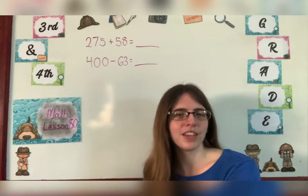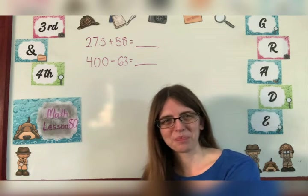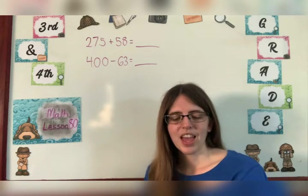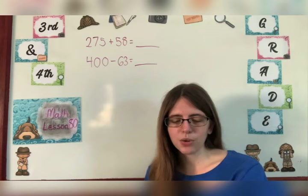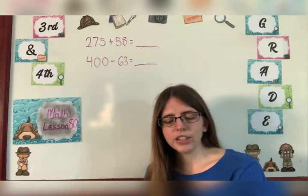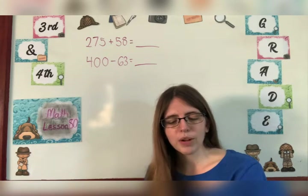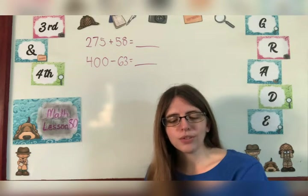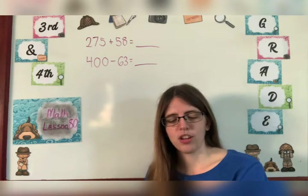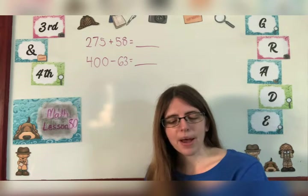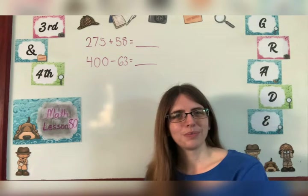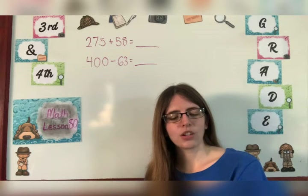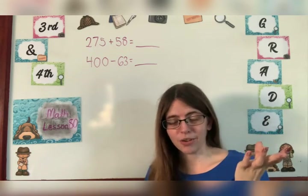Number three says write the answers to the measures. Number four, solve the story problems. The golden delicious apple tree produced 20 kilograms of apples. An empire apple tree produced eight times as much. How many kilograms of empire apples were produced? Okay. So what does the problem tell us? Well, it tells us that the golden delicious apples produced 20 kilograms.